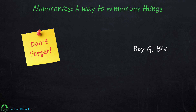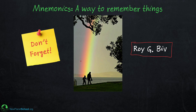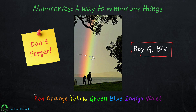ROYGBIV is a mnemonic that's designed to sound like someone's name — like you probably met people named Roy. They have a middle name G, and their last name is BIV. Sounds perfectly reasonable. What this mnemonic is for is to remember the colors of the rainbow. Starting from the outside and going in, the colors are red, orange, yellow, green, blue, indigo, and violet — and that spells ROYGBIV.